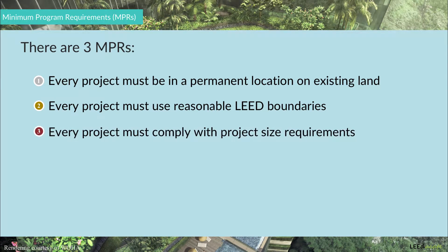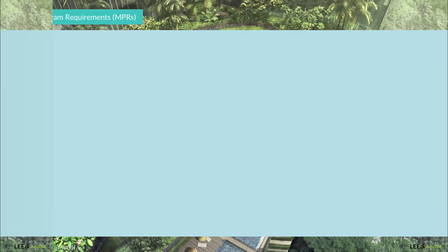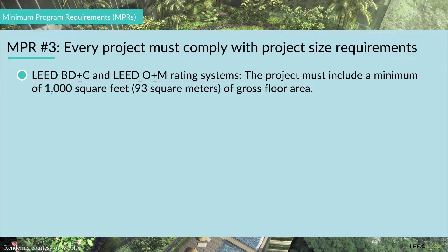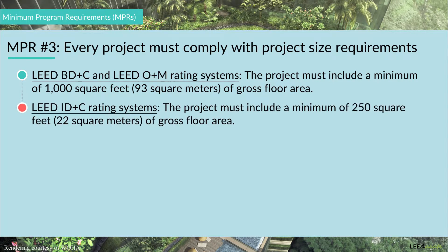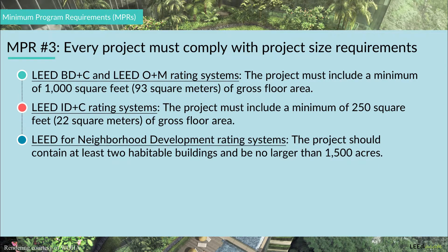According to MPR number three, projects must comply with project size requirements. All LEED projects must meet the following size requirements according to their rating system. For LEED BD+C and LEED O+M rating systems, projects must include a minimum of 1,000 square feet or 93 square meters of gross floor area. For LEED for Neighborhood Development rating systems, projects should contain at least two habitable buildings and be no larger than 1,500 acres.